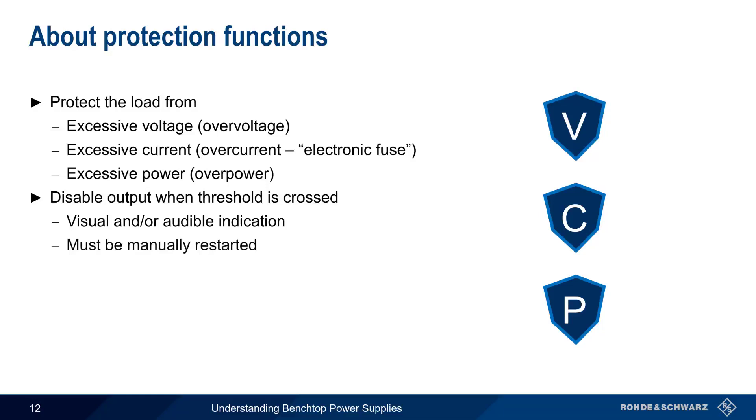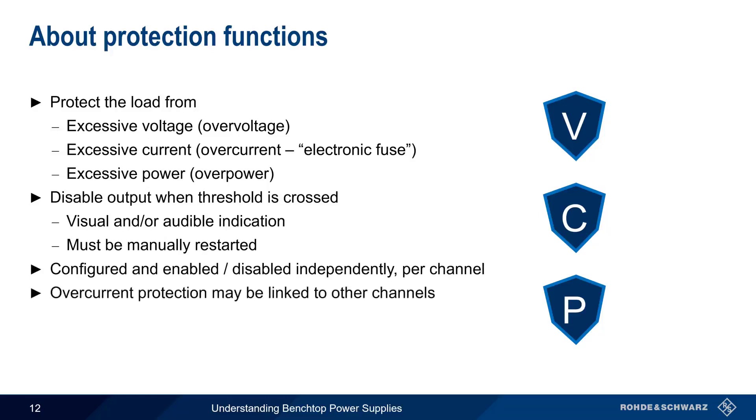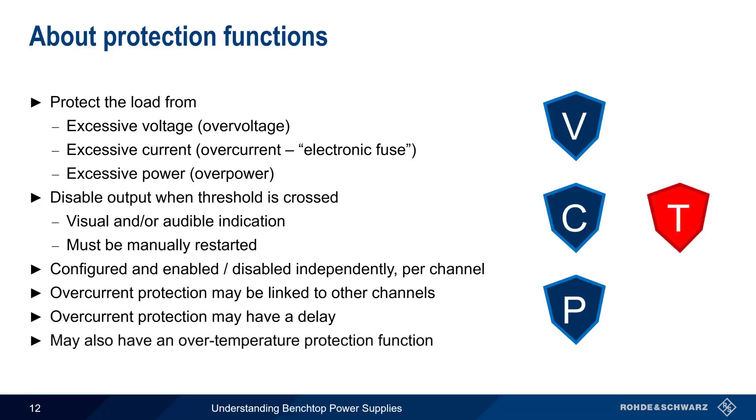In most cases, the supply output must then be manually restarted. Protection functions are normally configured and enabled or disabled on a per-channel basis, although overcurrent protection may be linked to other channels. That is, if one channel's electronic fuse is tripped, all of the channels linked to it are also disabled. Overcurrent protection may also have a delay at startup to avoid having the output disabled due to high, but short duration, inrush currents. And finally, the supply itself may have an over-temperature protection function that shuts the supply down if the supply's internal temperature becomes too high.